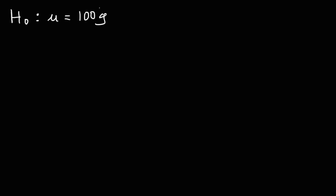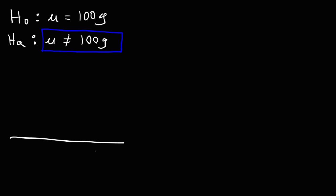He believes that the mean is not 100 grams — so this is going to be the alternative hypothesis. Whenever the alternative hypothesis states that a value doesn't equal some number, you're going to have a two-tailed test. Let's draw a picture of that.